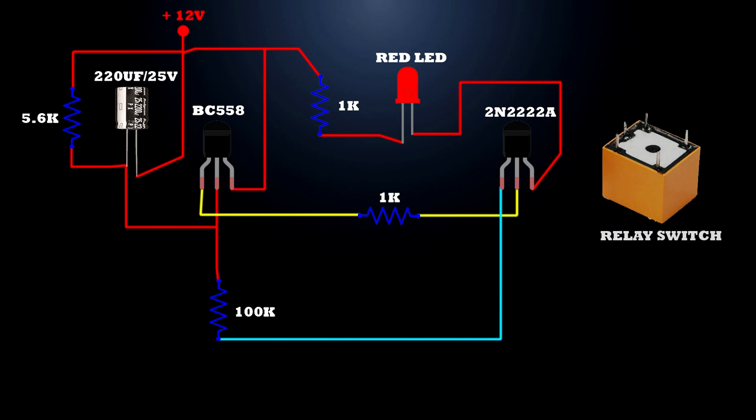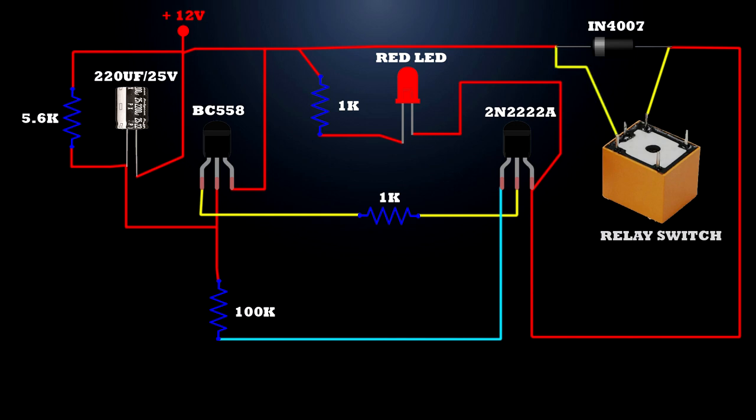2N2222A transistor third pin. Setup IN4007 diode. Diode negative pin connects to BC550A transistor third terminal. Diode positive terminal connects to 2N2222A transistor third pin. Relay first coil pin connects to 2N2222A transistor third pin. Relay second coil pin connects to BC550A transistor third pin. Common ground. Circuit setup completed.